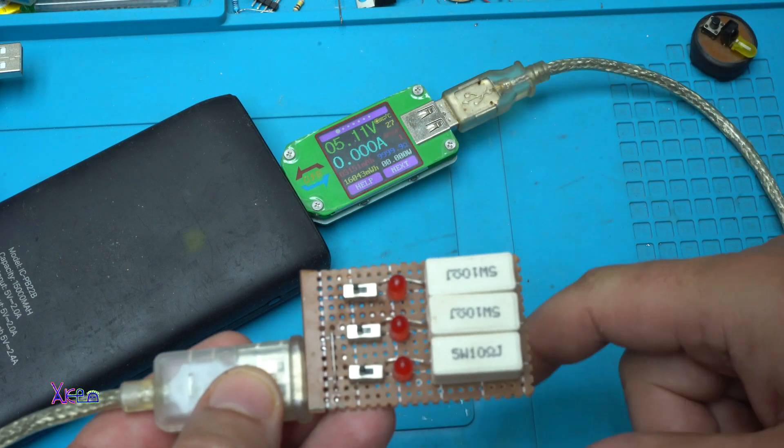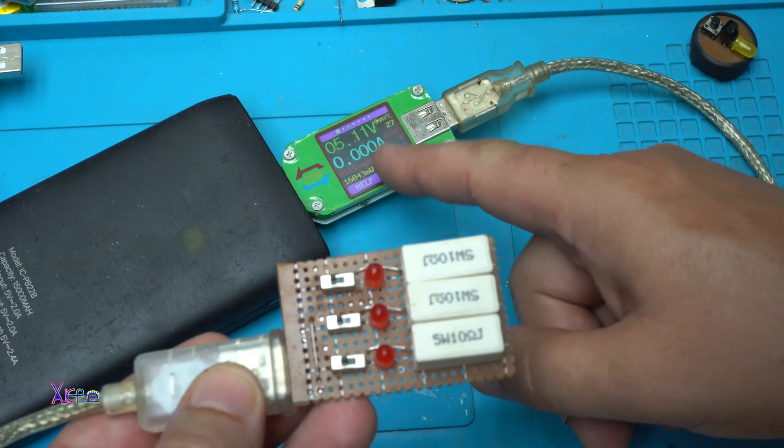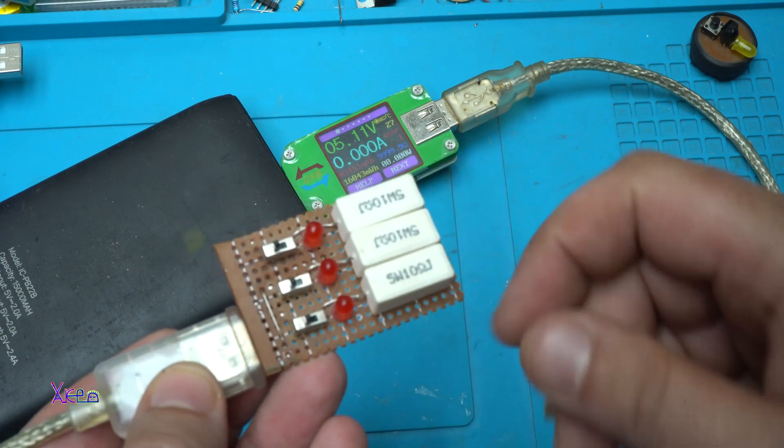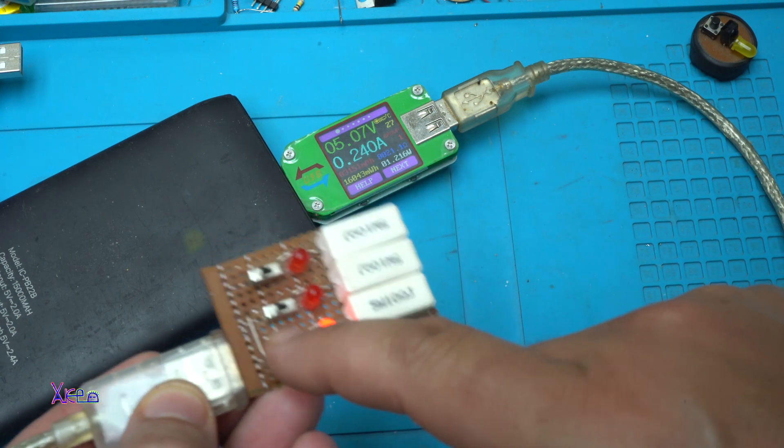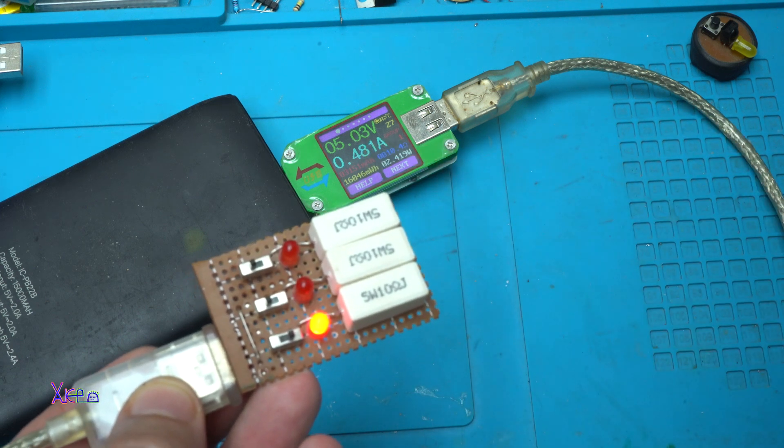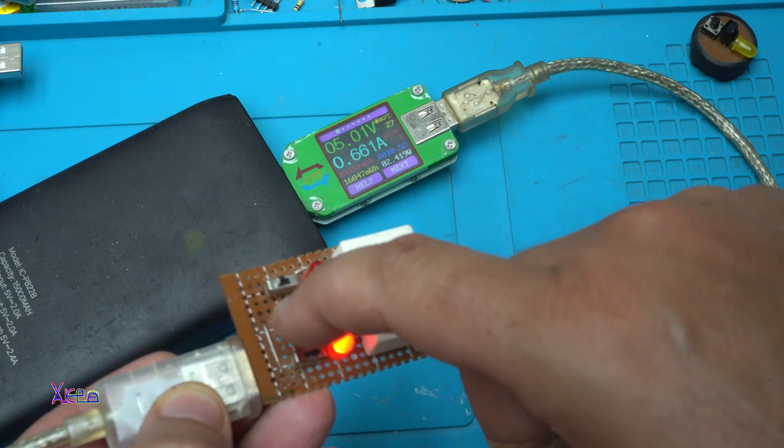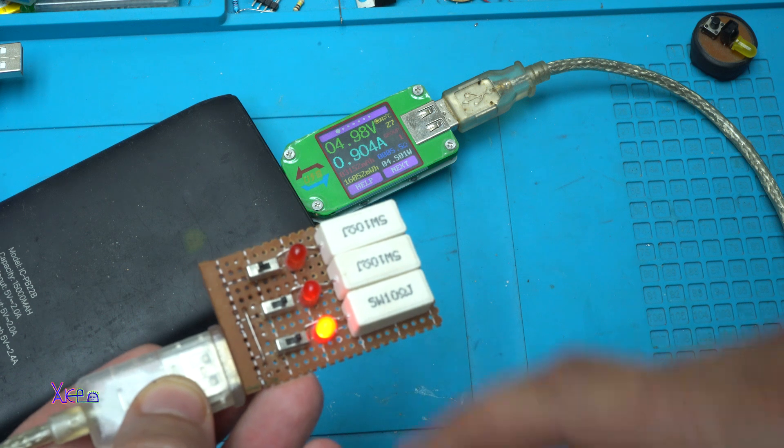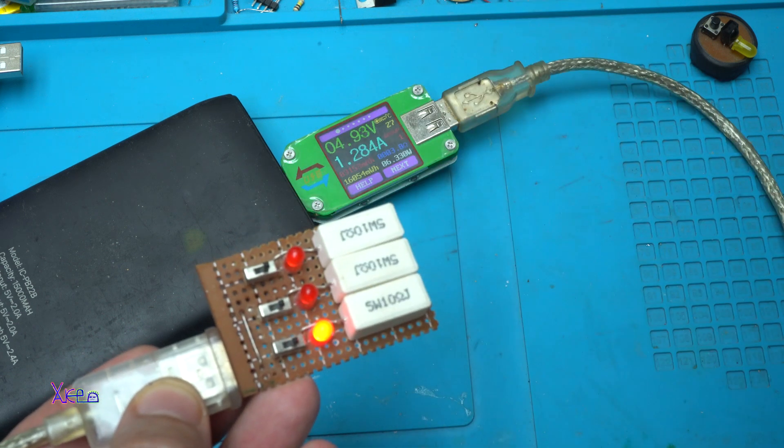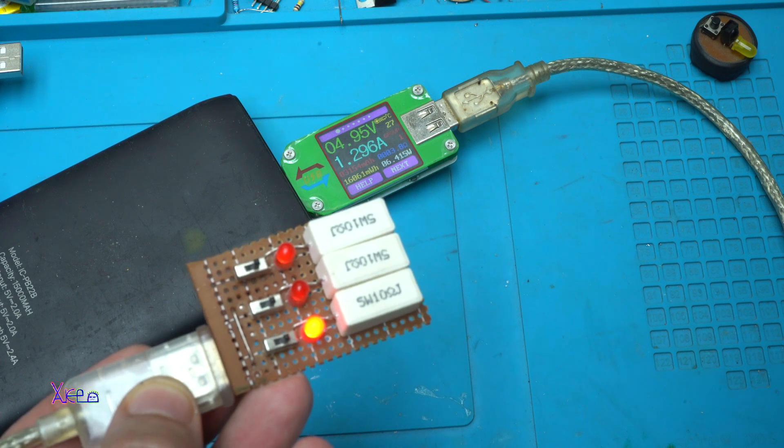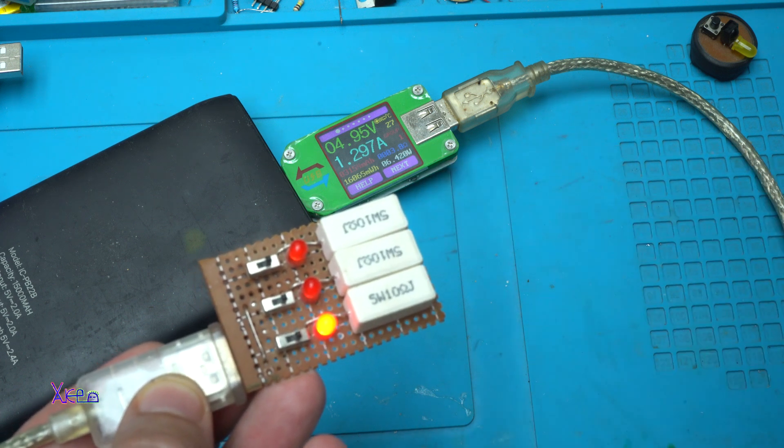I have hooked up the USB monitor device and it's connected to the power bank. When I choose first level we discharge it with 480 milliamps, this one almost 900 milliamps, and this one it goes 1.29 or 1.3 amps. Great, working.